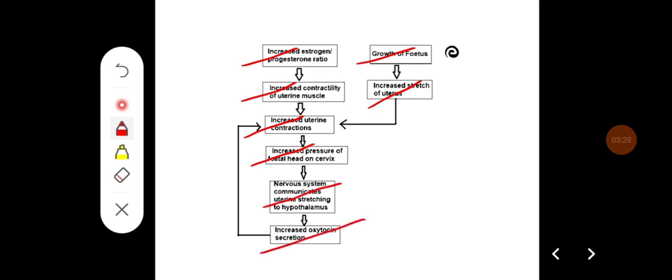oxytocin release, which increases uterine contraction. This becomes a positive feedback cycle, leading to the parturition reflex.